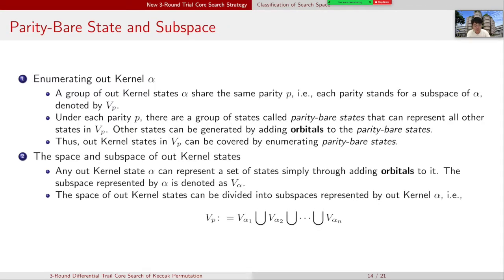Before we go through the search algorithm for cases with at least one out kernel state, we need to know some definitions first. A group of out kernel states α2 share the same parity P. So each parity stands for a subspace of α2 denoted by Vp. On each parity P, there are a group of states called parity-bare states that can represent all other states in Vp. Other states can be generated by just adding orbitals to the parity-bare states. So out kernel states in Vp can be covered by enumerating all the parity-bare states.